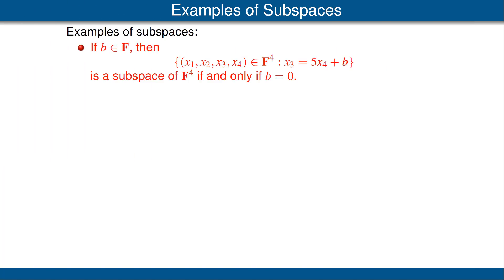For our first example, fix a number B and consider the set of elements of F⁴ whose third coordinate equals 5 times the fourth coordinate plus B. Then it's easy to see that this set is a subspace of F⁴ if and only if B equals 0. The reason B needs to be 0 is we must have the additive identity in our set U. In this case, the additive identity is the vector consisting of 0, 0, 0, 0.